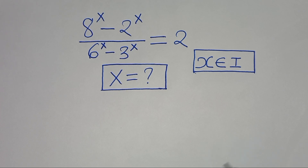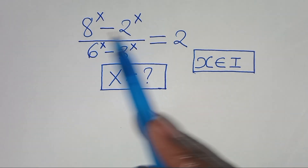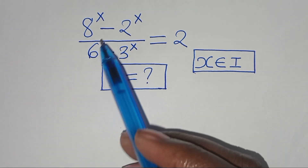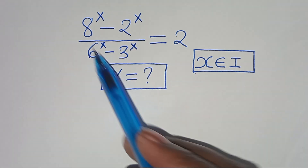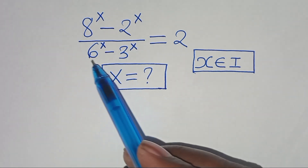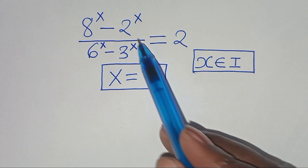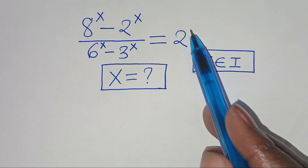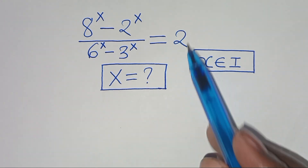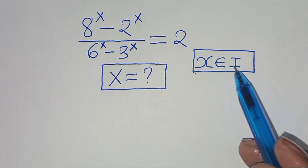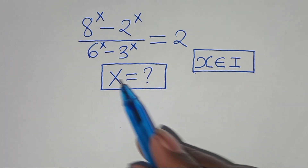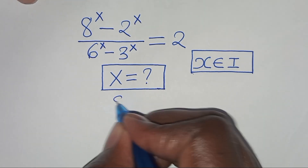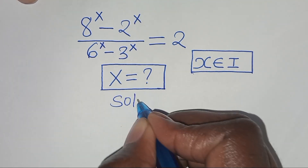Hello everyone, you are welcome to solve this nice math problem which is: (8 to the power x minus 2 to the power x) divided by (6 to the power x minus 3 to the power x), this is equal to 2, given that x is a member of the integers. So what is the value of x? Let's provide the solution.